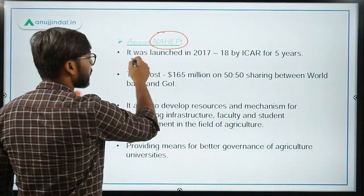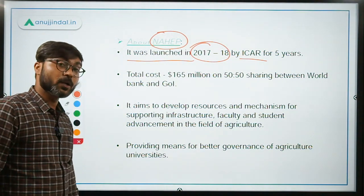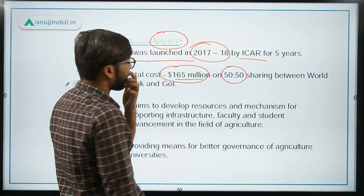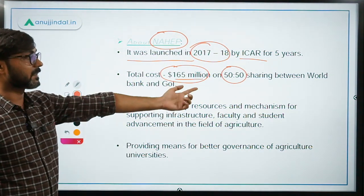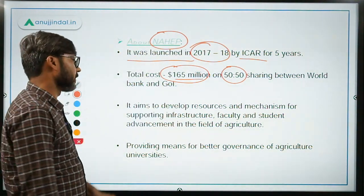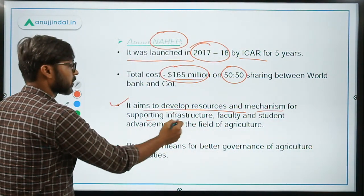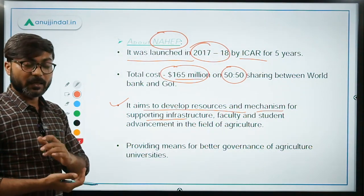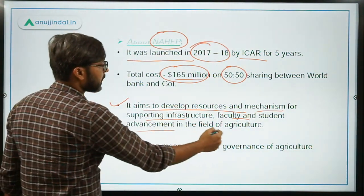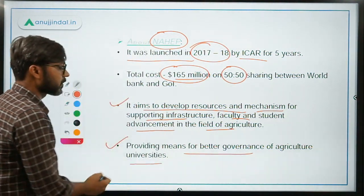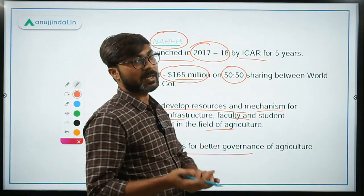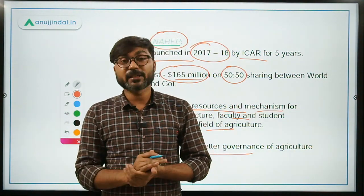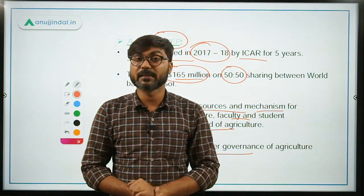The National Agricultural Higher Education Project (NAHEP) was launched in 2017-18 by the Indian Council of Agricultural Research for a period of five years. Its total cost is 165 million dollars on a 50-50 sharing basis between the World Bank and the Central Government of India — remember this, it is very important as it is a World Bank supported project. Its aim is to develop resources and mechanisms for supporting the infrastructure of agricultural education, faculty and student advancement in agriculture, and to provide means for better governance of agricultural universities in our country.